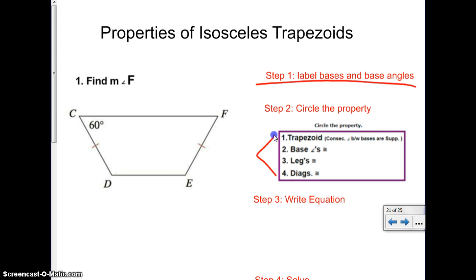So let's look at number one. It says find angle F. F is what we're looking for. Before we do that, let's label our bases and our base angles. Now remember the bases are the parallel sides, which means this is a base and this is a base, which means your base angles are C, D, E, and F.